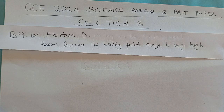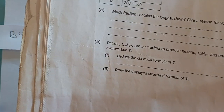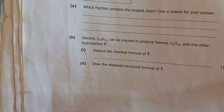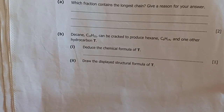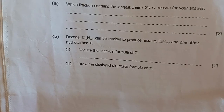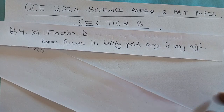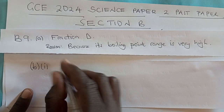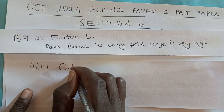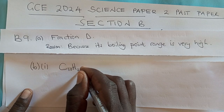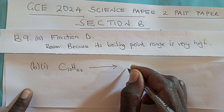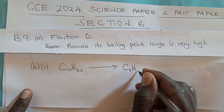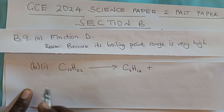We move on to question B2. B2 says: decane can be cracked to produce hexane and one other hydrocarbon, T. We are asked to deduce the chemical formula of T. Decane is C10H22, and it is cracked to produce hexane, which is C6H14, plus another hydrocarbon T.